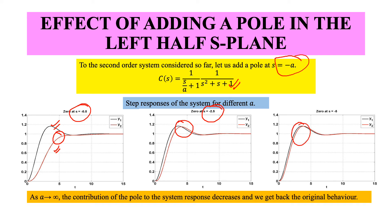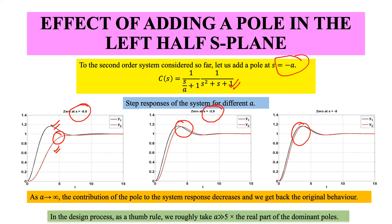Keep going further and the red line actually touches the black line. As the pole keeps going to infinity its contribution decreases and there is no effect at all. So whenever we have a design process where we have to add a pole such that it does not have too much effect on transient response, we take it five times the real part of the dominant poles. In this middle case the pole is at s equals minus 2.5. We will keep this in mind while explicitly talking about design problems for improving transient performance or steady state performance.